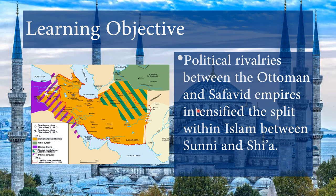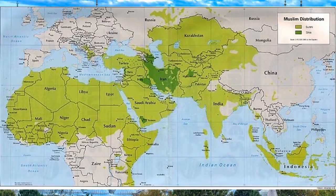The next learning objective: political rivalries between the Ottoman and Safavid empires intensified the split within Islam between Sunni and Shia. The Safavid are Shia — they sent out Shia missionaries and slaughtered Sunnis when conquering modern-day Persia. That intensified political and religious rivalries between Sunni and Shia, which we still see echoed today — with Iran being predominantly Shia surrounded by predominantly Sunni neighbors.